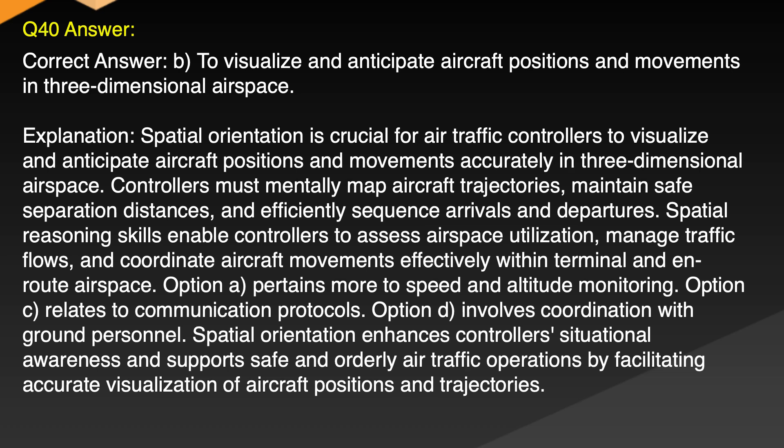Explanation: Spatial orientation is crucial for air traffic controllers to visualize and anticipate aircraft positions and movements accurately in three-dimensional airspace. Controllers must mentally map aircraft trajectories, maintain safe separation distances and efficiently sequence arrivals and departures. Spatial reasoning skills enable controllers to assess airspace utilization, manage traffic flows and coordinate aircraft movements effectively within terminal and en route airspace. Option A pertains more to speed and altitude monitoring. Option C relates to communication protocols. Option D involves coordination with ground personnel. Spatial orientation enhances controllers' situational awareness and supports safe and orderly air traffic operations.